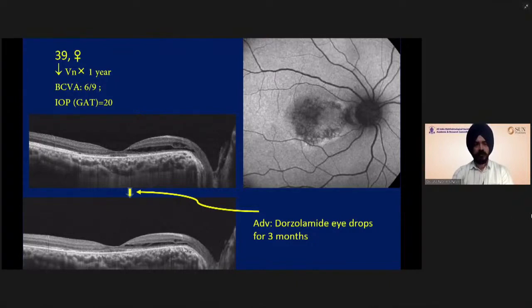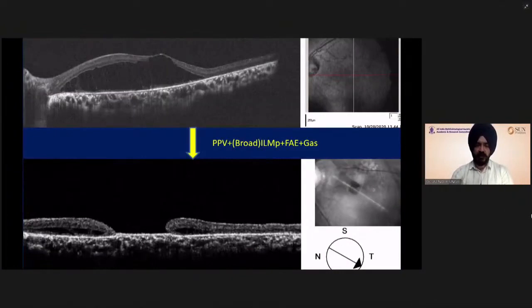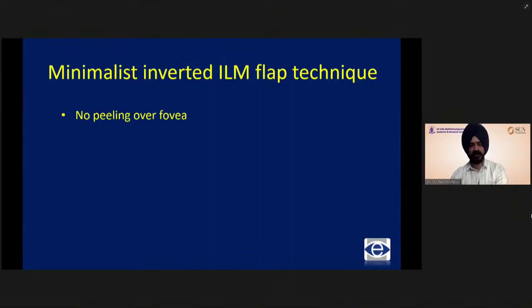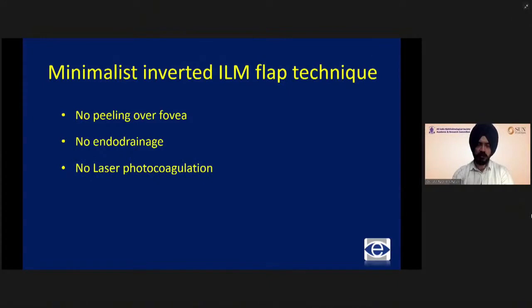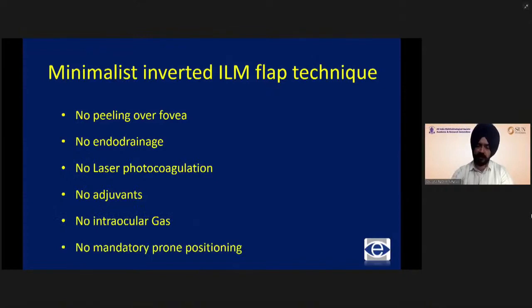This is a case which was managed with vitrectomy, and because of broad ILM peeling, the patient developed a full-thickness macular hole with vision of 6/24. My suggestion is to use a minimalistic inverted ILM flap technique with no peeling over the fovea — because there is no pathology at the fovea — no endodiathermy, no laser, no adjuvants, no intraocular gas, and no mandatory face-down positioning.